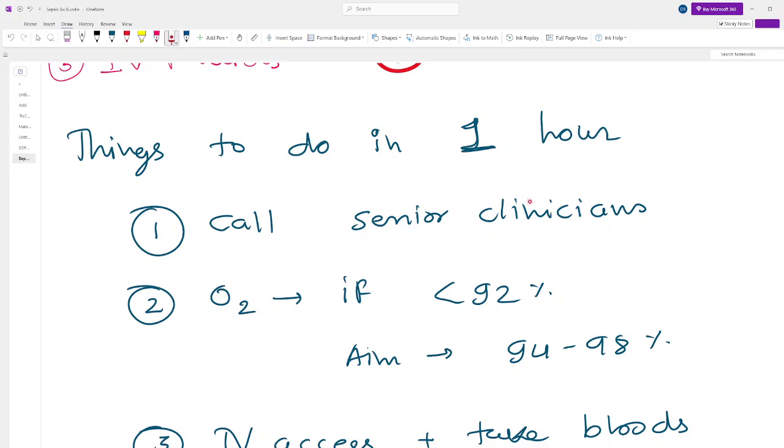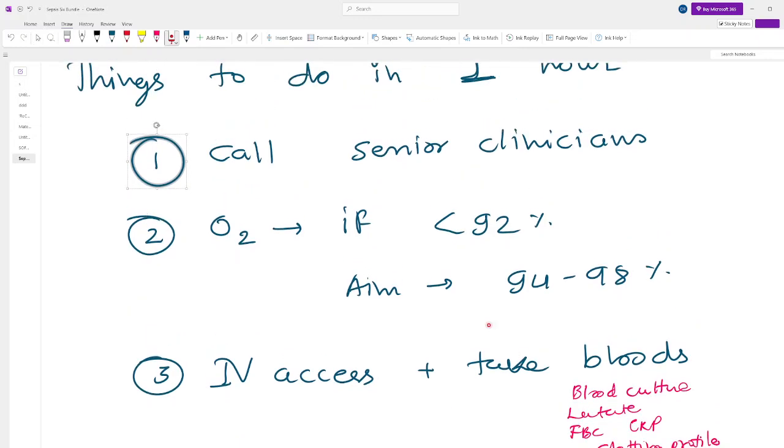What to do in one hour? First, you need to call your senior clinician. This is not applicable if you are yourself a senior clinician. Second thing is oxygen. Administer oxygen if the saturation is less than 92%, and your aim is to get the saturation to 94 to 98%.